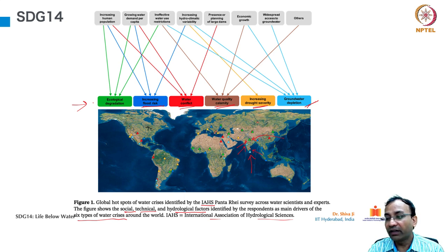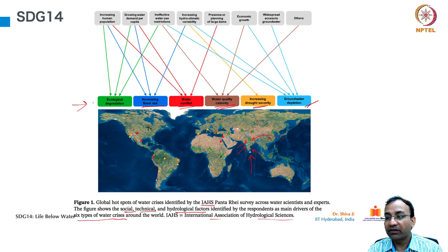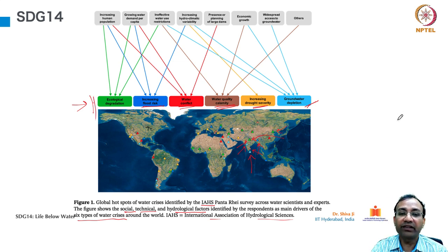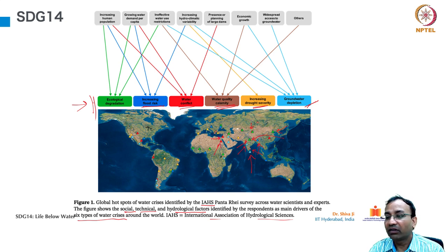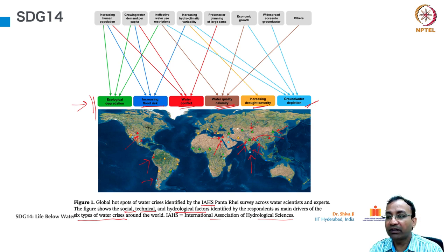Water quality calamity can be seen in the Gangetic plain and ecological degradation there as well. In Deccan we see groundwater depletion — the water table is going down very fast — and Sri Lanka also has the same situation. In the coastal eastern coast of India, in the southern India — Tamil Nadu and Andhra Pradesh — we also see water quality calamity. In northeast India we see increased flood risk. In China there are many greens — ecological degradation with so much pollution — and water conflict spots also. There are reds in the Middle East and northeastern Africa.